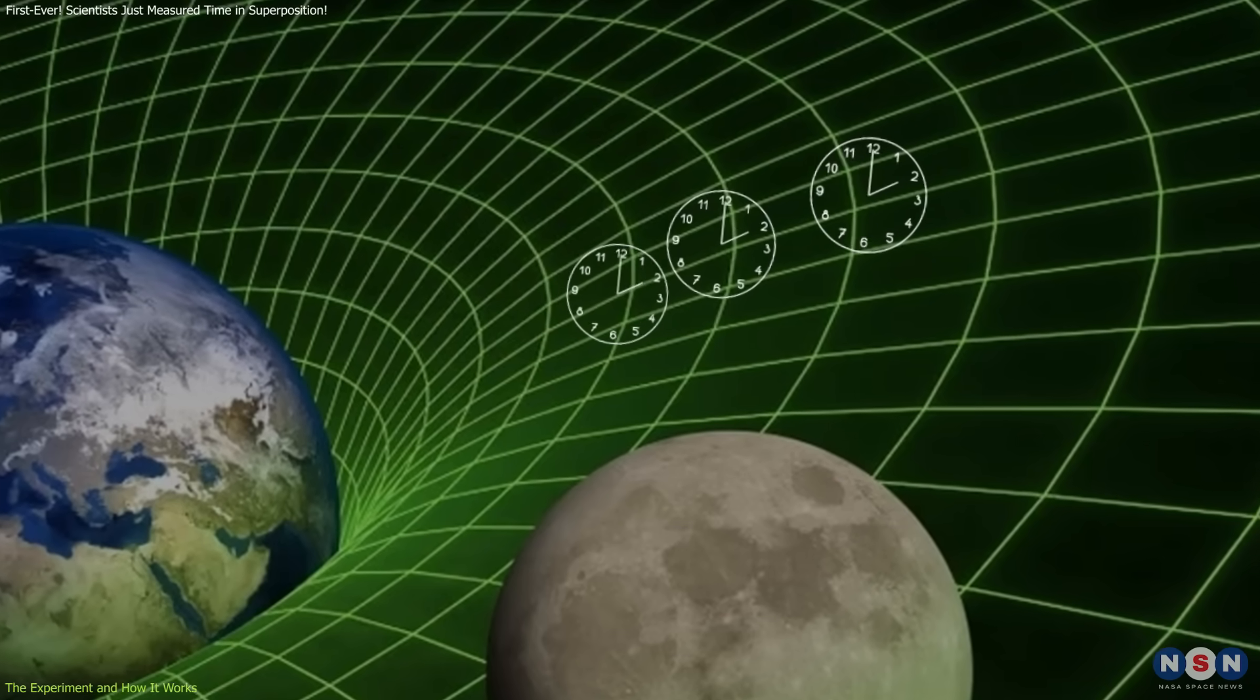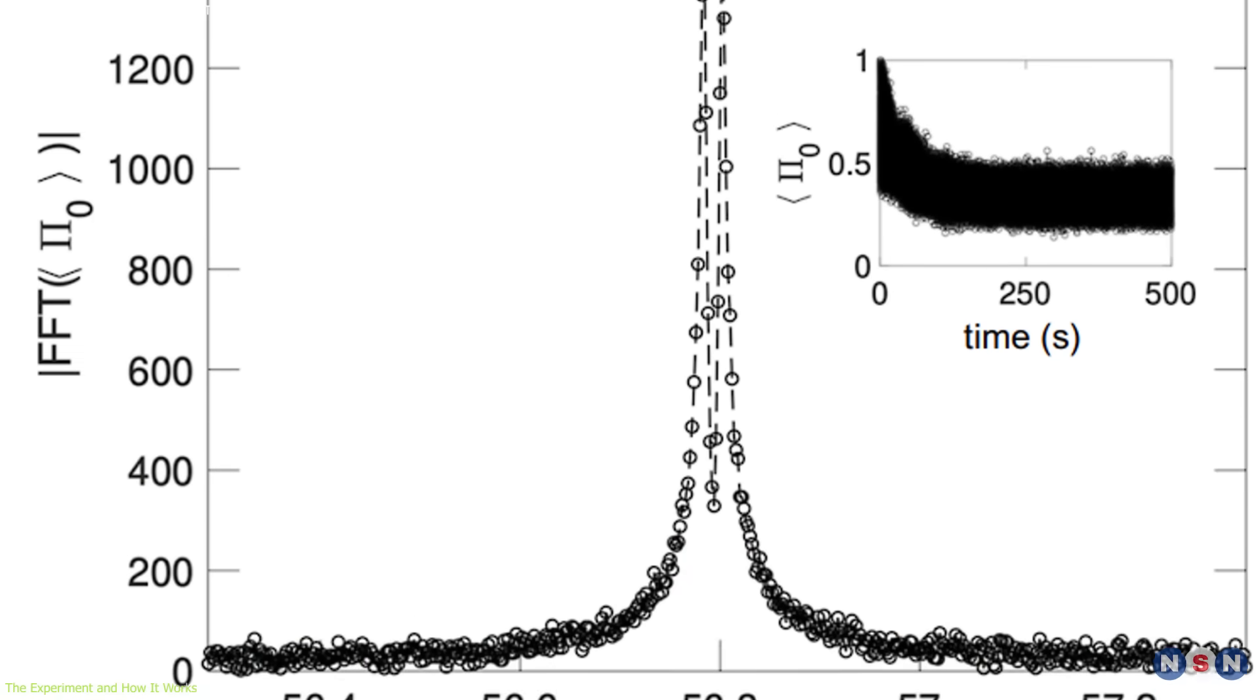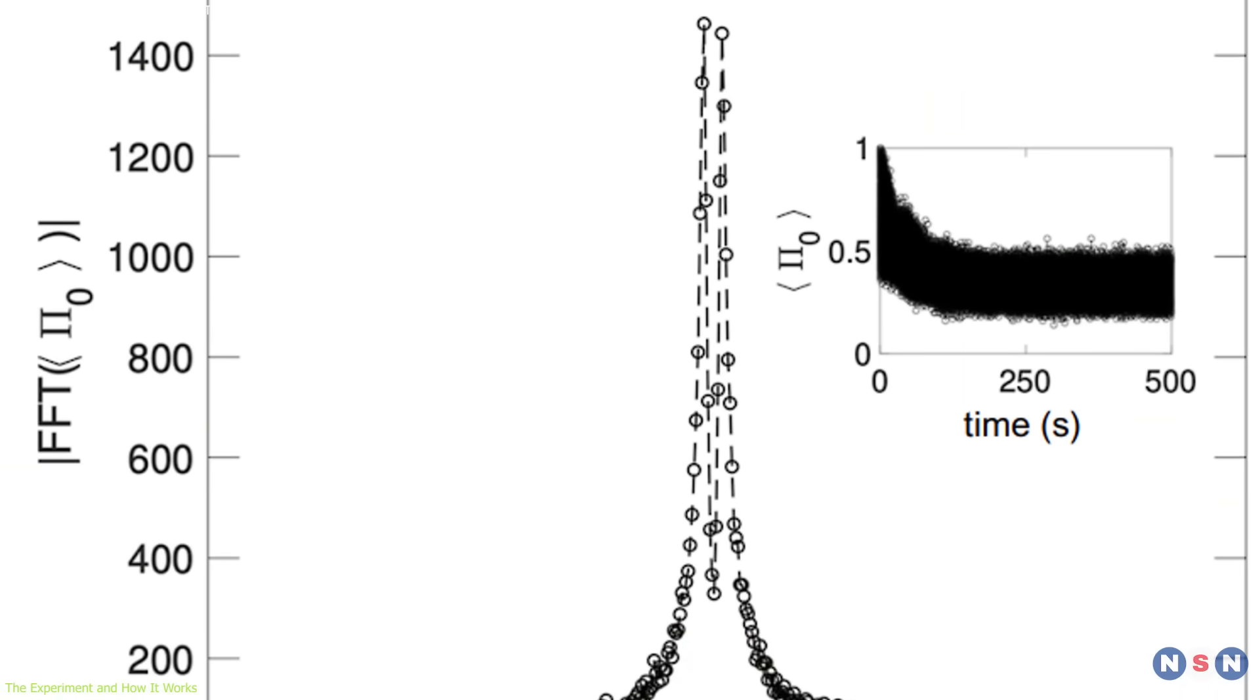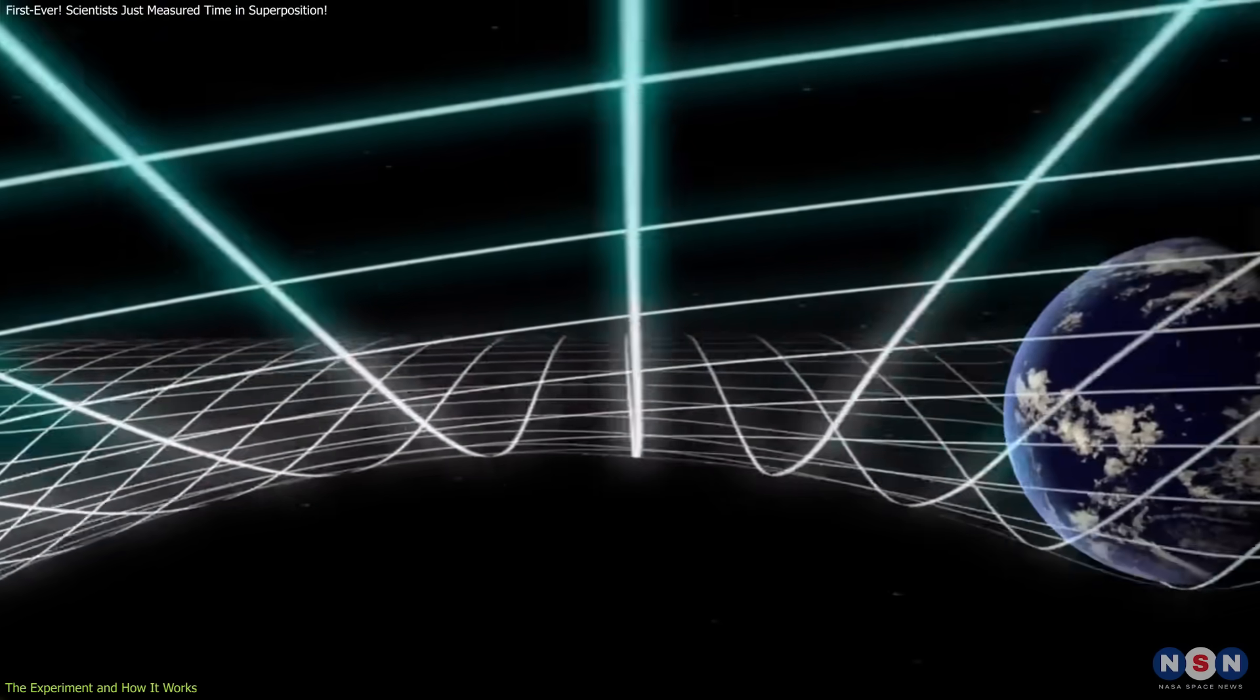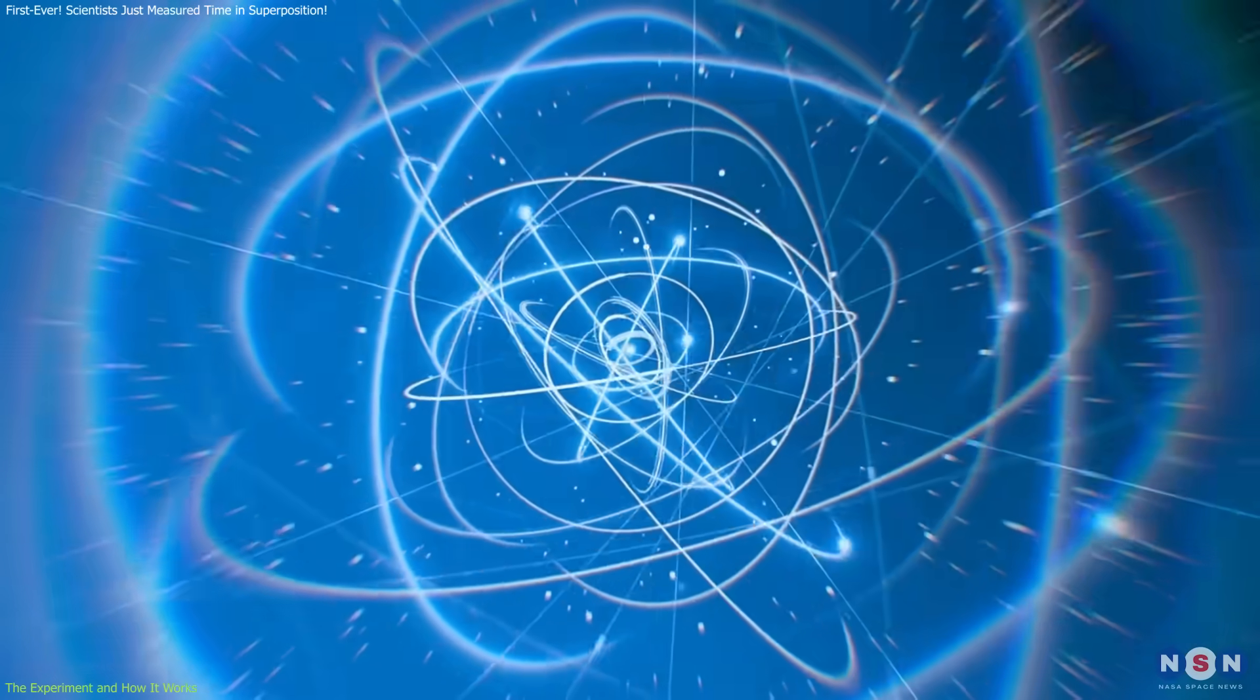When the clock evolves in this superposed state and is later recombined, it creates an interference pattern, much like overlapping waves. This interference reveals how differences in gravitational potential affect the evolution of the quantum system.